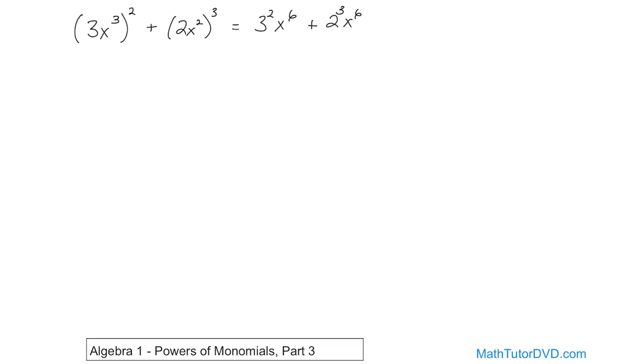So then, the first term here, what is 3 squared? 3 times 3 is 9, x to the 6th power. What is the second term here? What is 2 to the power of 3? That's 2 times 2 times 2. You should be able to convince yourself that's 8, again, to the power of 6.